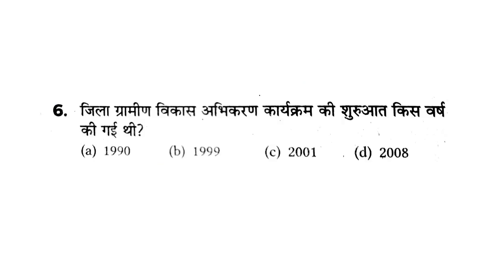Q6: In which year was the Jila Gramid Vikas Abhikaran (DRDA) program started? The Jila Gramid Vikas Abhikaran program was started in 1999. Its main purpose is to address and eliminate poverty at the district rural level, and its key function is to effectively run all Gram Vikas Ministry poverty-related programs.